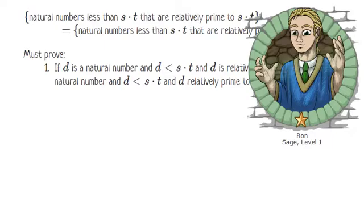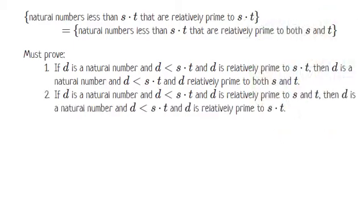That if it's relatively prime to s and t, then it's relatively prime to s times t. Well, you skipped over the details about d being a natural number and less than s times t, but yes, your summary is essentially correct.